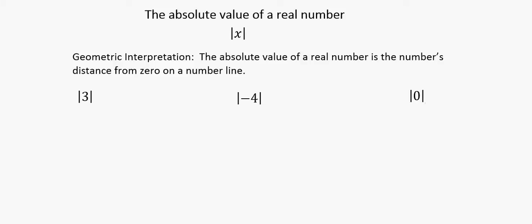In this video we're going to look at the geometric interpretation of the absolute value. And the geometric interpretation is that the absolute value of a real number is the number's distance from 0 on a number line.